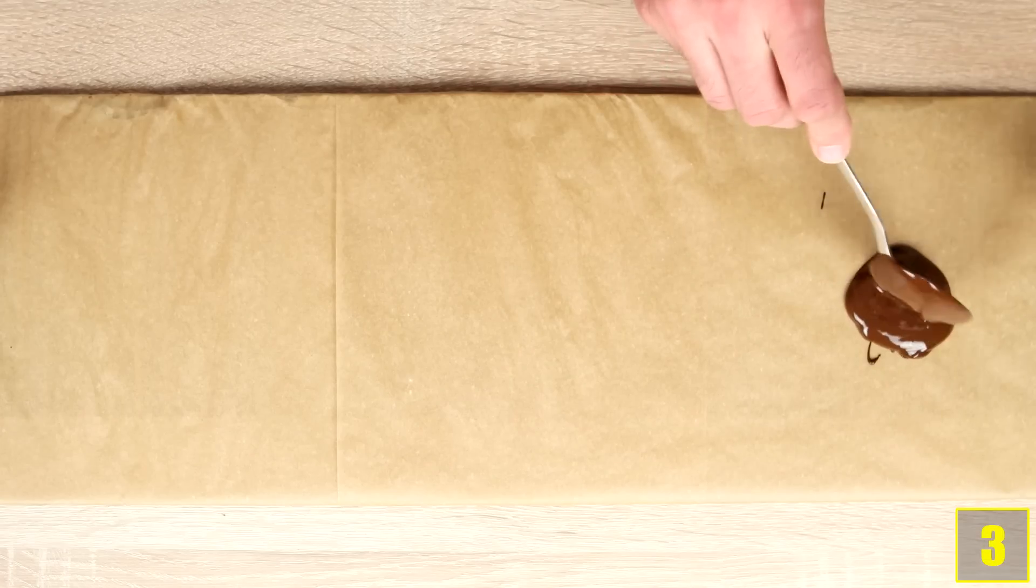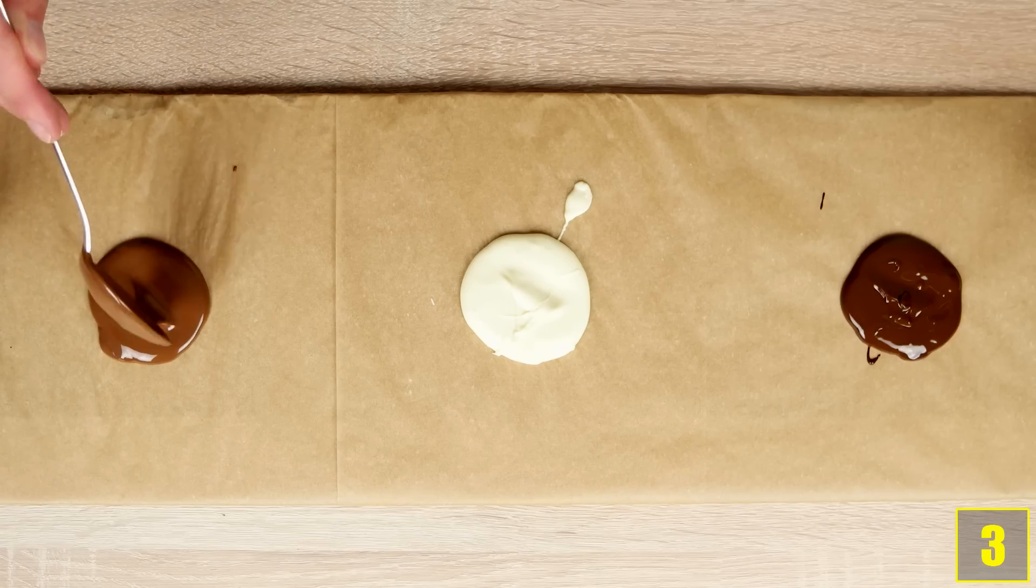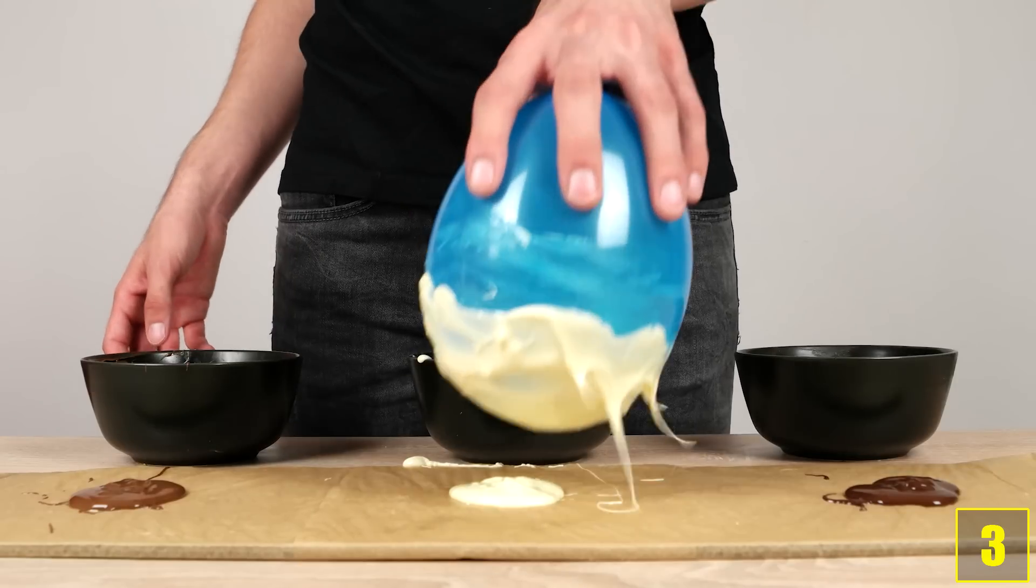Up next, number three. Put some melted chocolate on a piece of baking paper. Now dip the balloon in the chocolate so that you have a bowl around it and put it on your chocolate blobs.